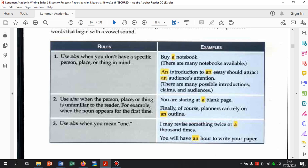Using a atau an when the person plus or thing is unfamiliar to the reader. For example, when the noun appears for the first time. Jadi, ketika memperkenalkan hal yang baru. Yang idenya masih baru. Belum diperkenalkan sebelumnya. Belum dijelasin sebelumnya. Itu pakai a atau an. Contoh. You are staring at a blank page. Finally, of course, planners can rely on an outline.